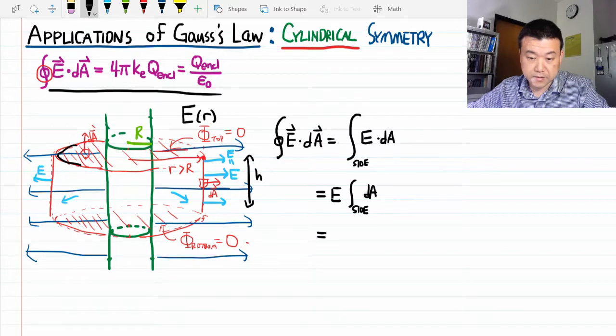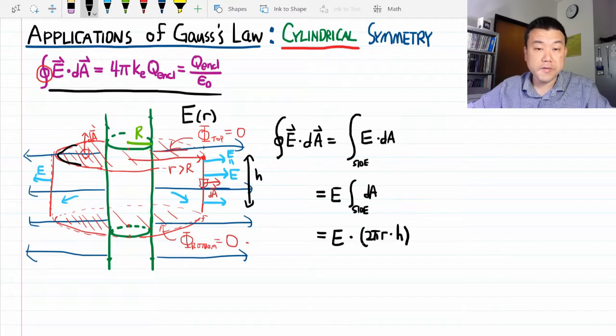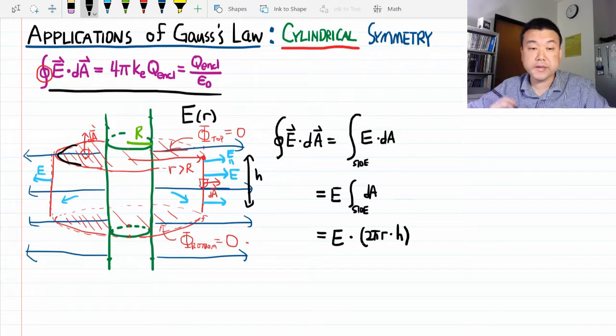This is the left-hand side: electric field times 2πrh. It's the net flux out of this cylindrical Gaussian surface. Now let's look at the right-hand side.